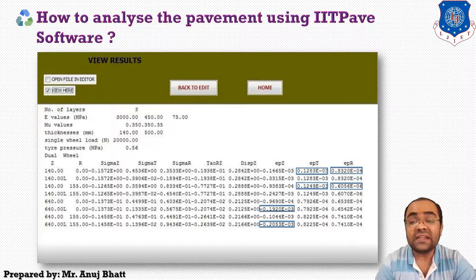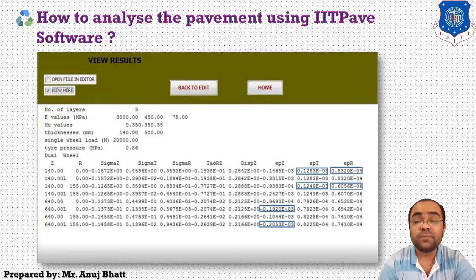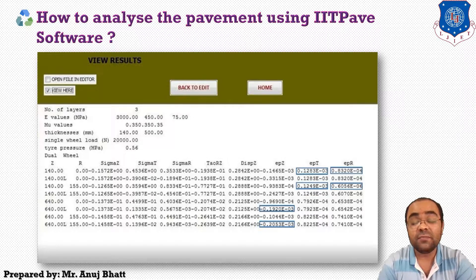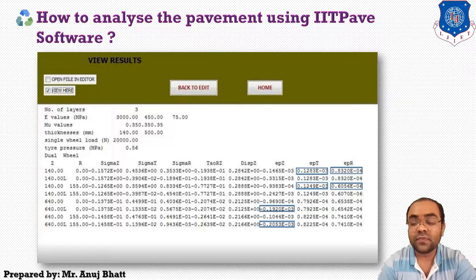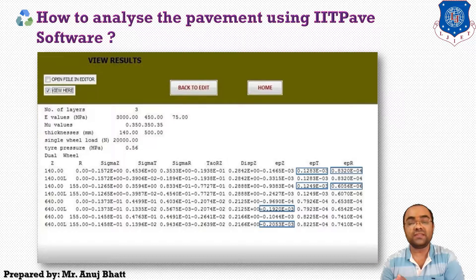EPT, which is the second last column, EPR, which is the last column, and EPZ will be the outputs of interest — these are the values of the different permissible strains that we need.